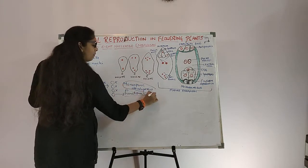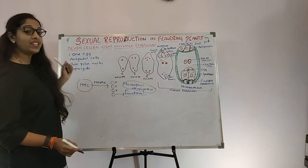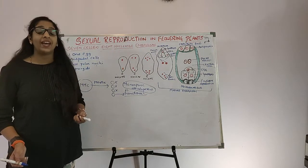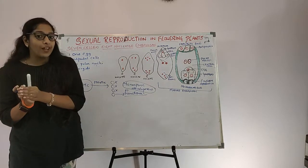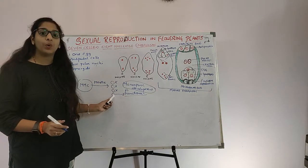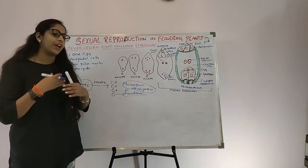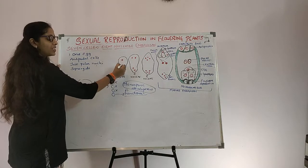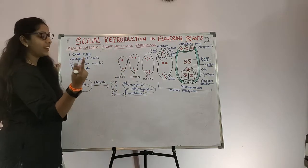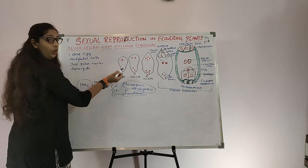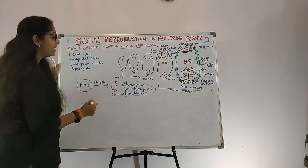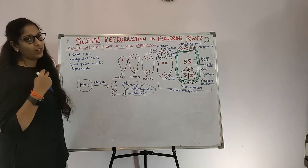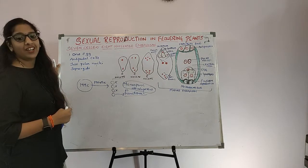Monosporic development means only 1 functional megaspore is produced. After the production of this functional megaspore, the nucleus of the megaspore divides into 2 nuclei which move towards opposite poles. This stage is known as the 2-nucleate embryo sac, or simply the 2-nucleate stage.